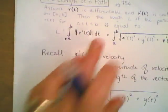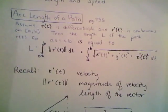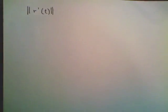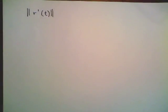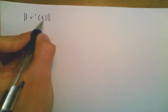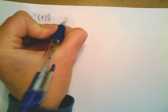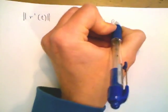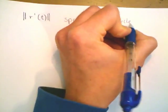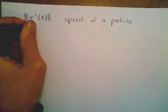Let's look in a little more detail at what magnitude means in this specific case. We're talking about the magnitude of r prime of t. Because r prime of t is our velocity vector, the magnitude of r prime of t is going to be the speed of a particle, when we're thinking of r of t as the position of the particle.